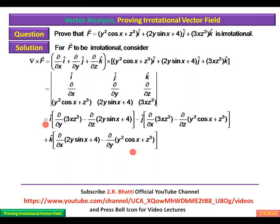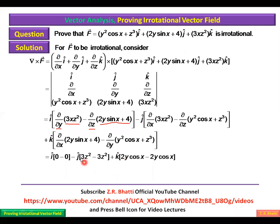Now we take the derivatives carefully. The partial derivative of 3xz² with respect to y gives 0, because there is no y in that term. Similarly, the partial derivative of (2y sin x + 4) with respect to z also gives 0.